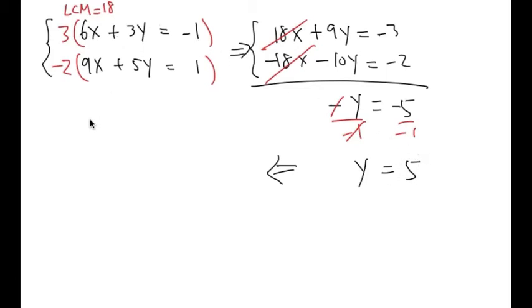We have y equals 5, so I'm going to plug 5 into this y. I will have 6x plus 3 times 5, and on the right-hand side we still have equals negative 1.